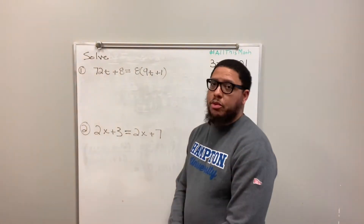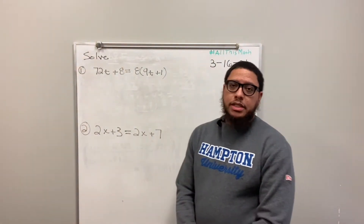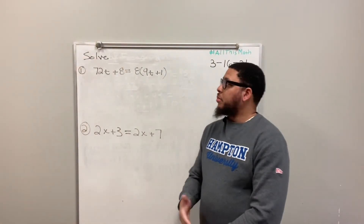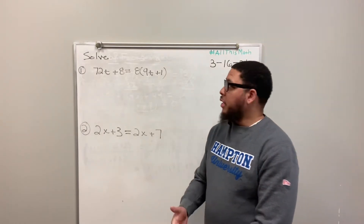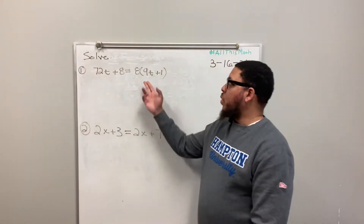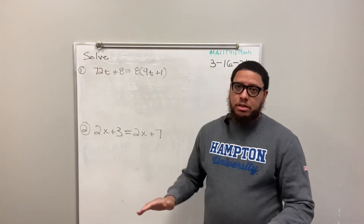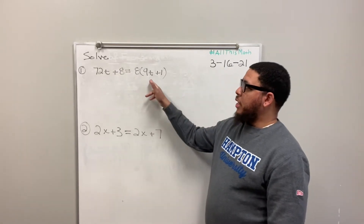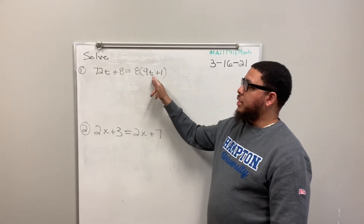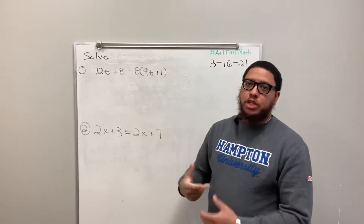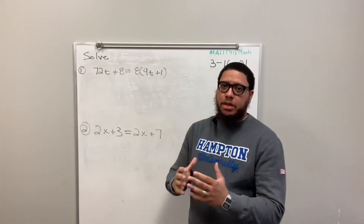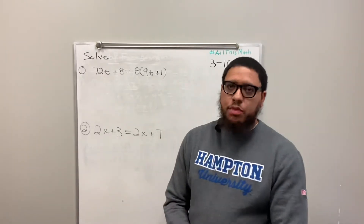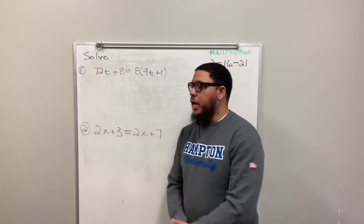Now let's take a look at number one. Number one says 72t plus 8 is equal to 8 times the quantity 9t plus 1. Whenever you have an expression inside parentheses we call that a quantity. That's how we refer to that.